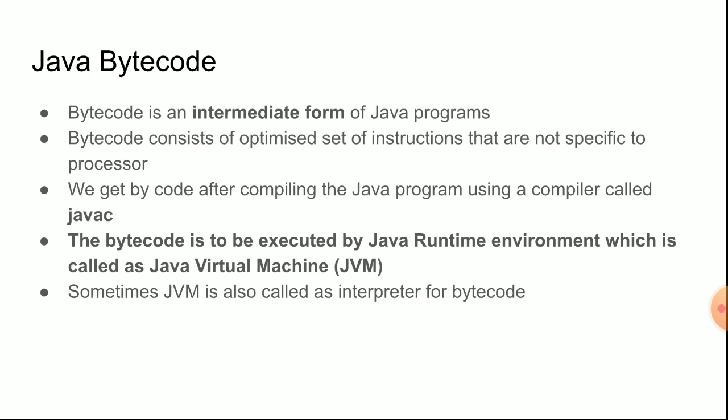Java bytecode is an intermediate form of Java programs. For step-by-step execution, if you have any syntax errors in each and every line of the program, bytecode will find out those errors and notify the programmer so that he can make corrections. Bytecode consists of an optimized set of instructions that are not specific to any processor.